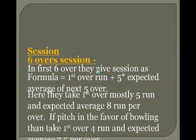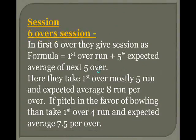Session 6 Overs. For the 1st 6 overs, the formula is: 1st over runs plus 5 multiplied by the expected average of the next 5 overs. Here he takes the 1st over mostly as 5 runs and expected average as 8 runs per over.